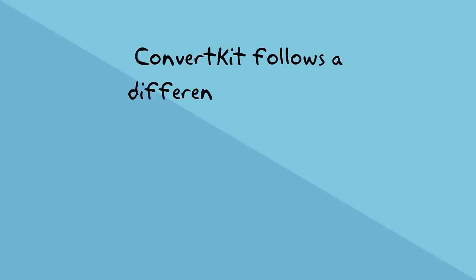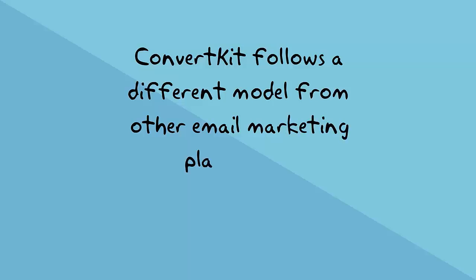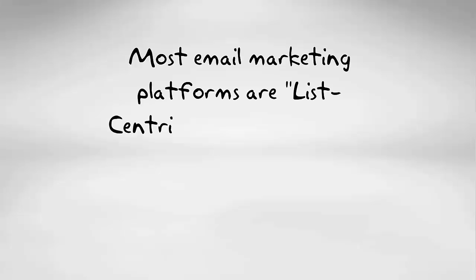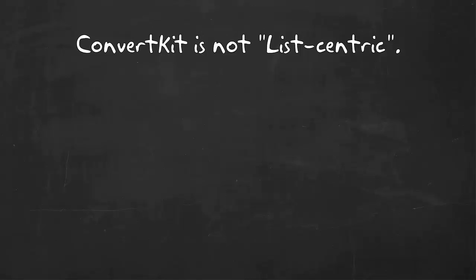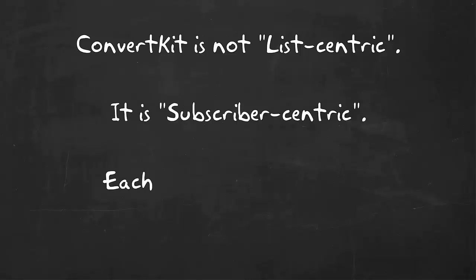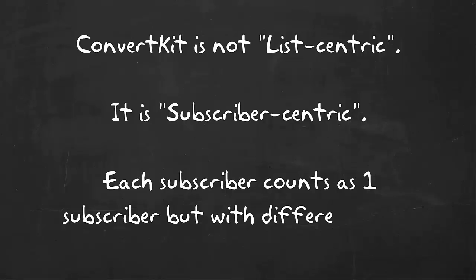ConvertKit follows a different model than other email marketing platforms. Most email marketing platforms are list-centric, where if the same person is on three different lists, they are counted as three different people. ConvertKit is not list-centric. It's subscriber-centric — each subscriber counts as one subscriber, but with different tags.